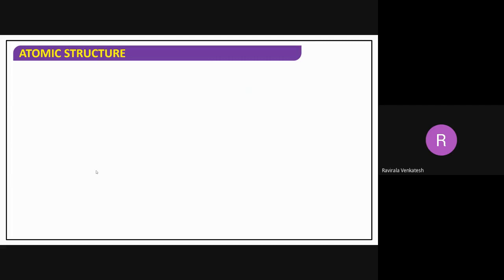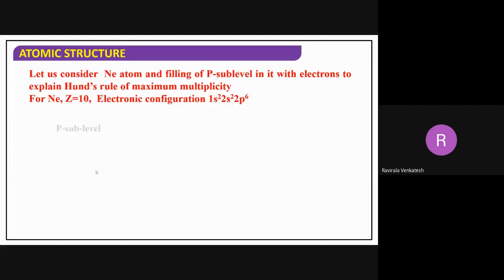Let us see this with an example. I have taken neon here. Its electronic configuration is 1s2, 2s2, 2p6. For 1s and 2s there is no problem because in 1s and 2s we have only one orbital each. But in the p orbital we have three orbitals. So let us see how we fill electrons in those three orbitals. In the 2p orbital we have six electrons to fill.